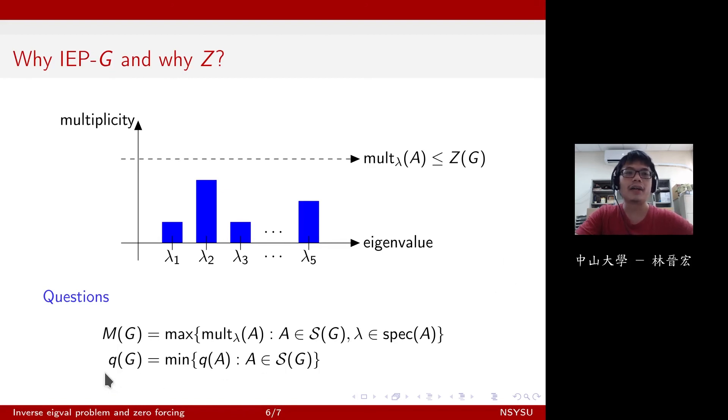And on the other side, we can also talk about Q of G, which is the minimum number of distinct eigenvalues over all matrices of S of G. And it turns out that there are just so many open questions in IEPG, and there's no general strategy to find out what is Q and what is M.